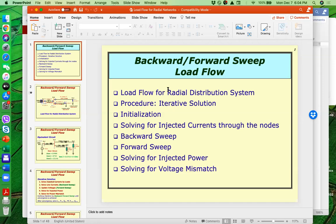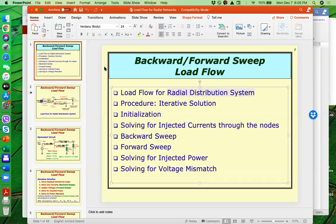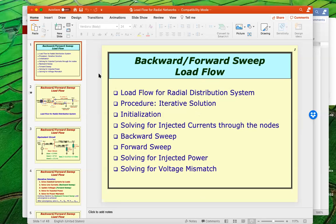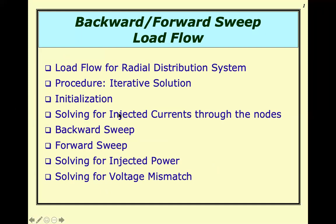The load flow method we have discussed so far is valid and can be used for any network — both distribution and transmission. However, for distribution networks that are radial in configuration, using the Gaussian method is more tedious. I will present a straightforward way of solving the load flow for a radial network, which is also iterative in nature, called the backward-forward sweep method.